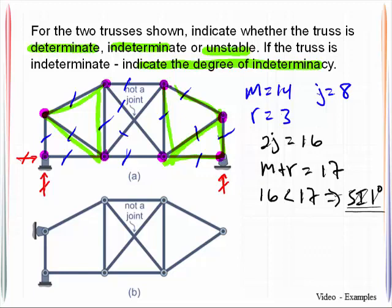So let's look on to the next one here. We will look at our reactions, and then we will also count up the number of members we have. 1, 2, 3, 4, 5, 6, 7, 8, 9, 10, 11. So we've got M is equal to 11. Number of joints, 1, 2, 3, 4, 5, 6, 7. And the number of reactions is 3.